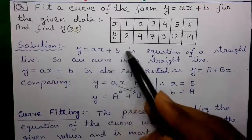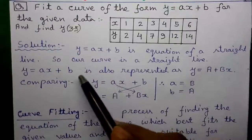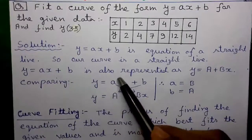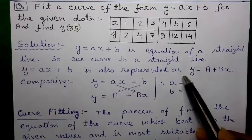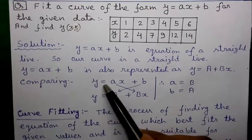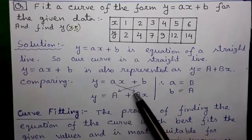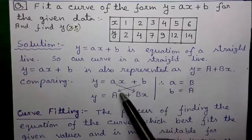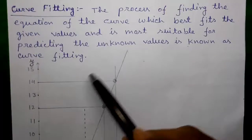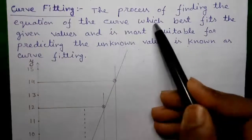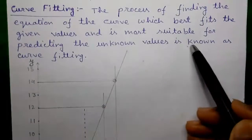Y equals AX plus B is the equation of a straight line, so our curve is a straight line. Y equals AX plus B is also represented as Y equals A plus BX — this representation is followed by Casio calculators. If you compare both representations, you will find that small a equals capital B and small b equals capital A. I will explain this in my calculator tutorial video. Next, the definition of curve fitting: the process of finding the equation of the curve which best fits the given values and is most suitable for predicting unknown values is known as curve fitting.